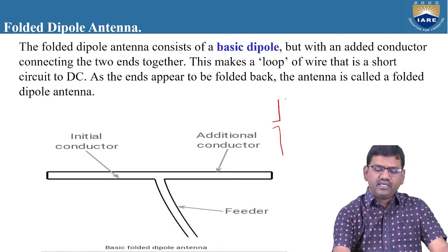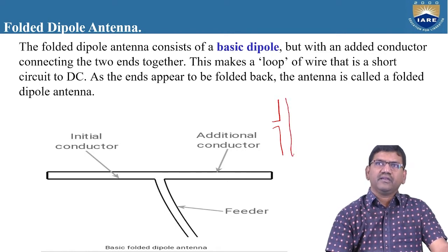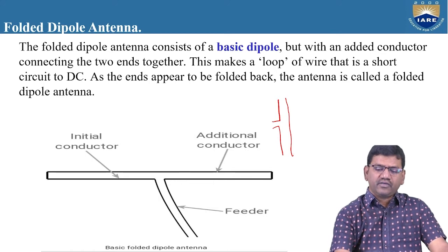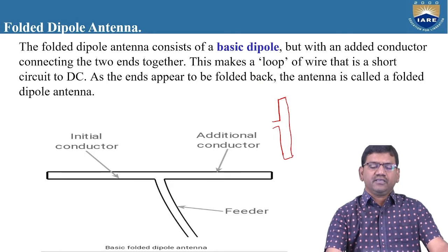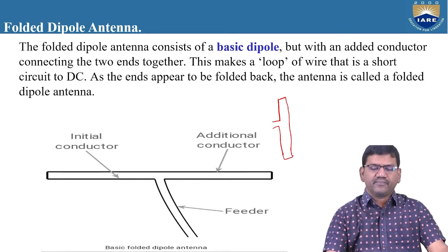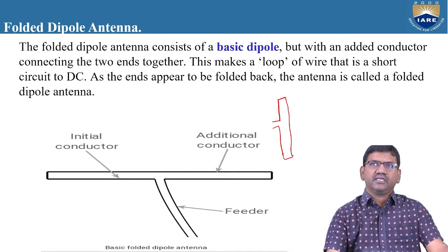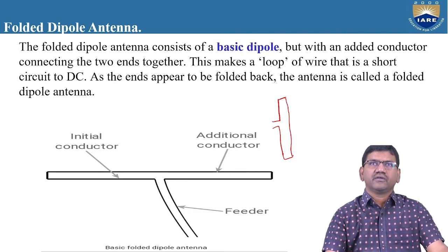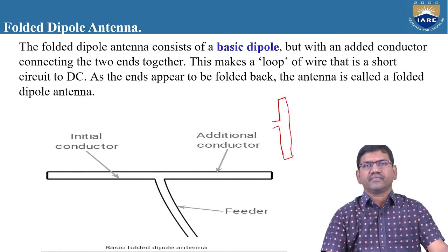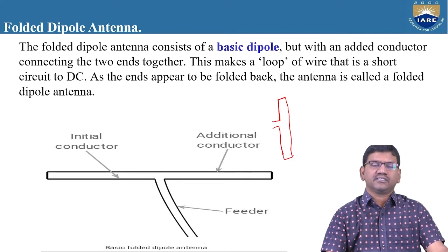If you put a conductor in parallel to a half-wave dipole antenna and connect these two ends together, the resulting figure is nothing but a folded dipole antenna. This folded dipole antenna is one form of a half-wave dipole antenna where the radiation pattern is similar — it has the same radiation characteristics as the half-wave dipole antenna.